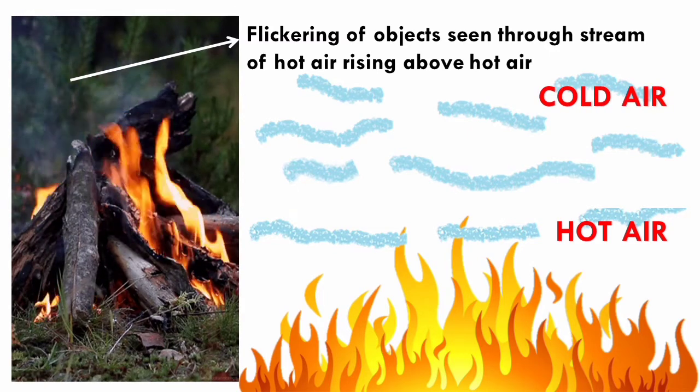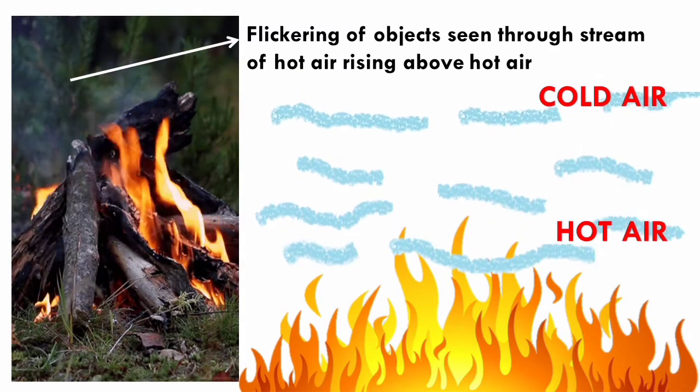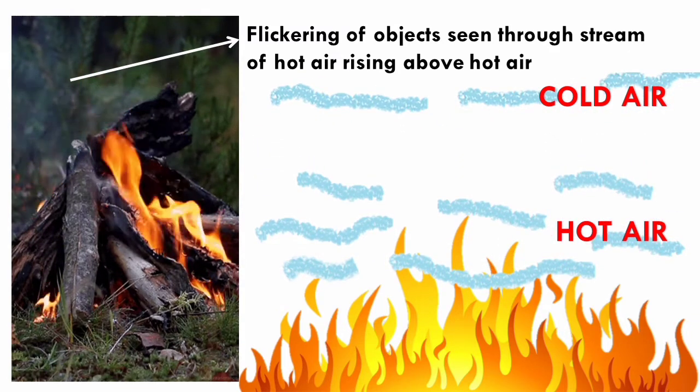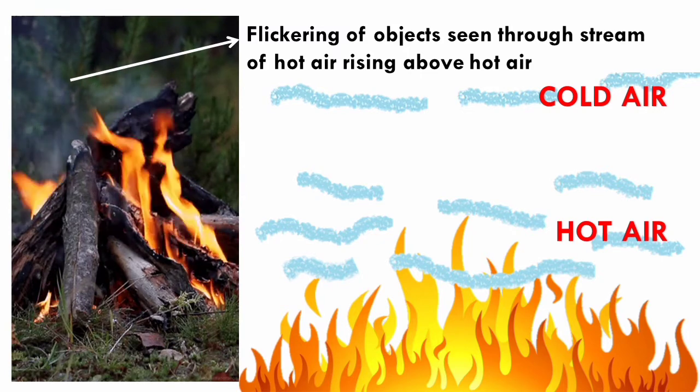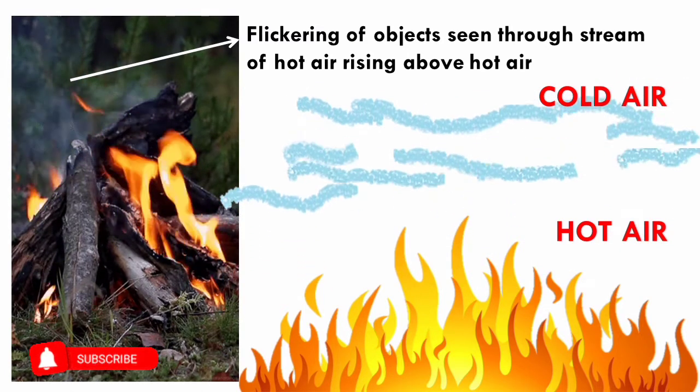So, when we see the objects by the light coming from them through the hot and cold air layers having different optical densities, refraction of light takes place randomly and the object appears to be moving slightly or flickering.